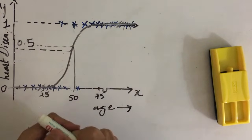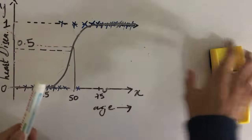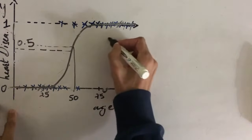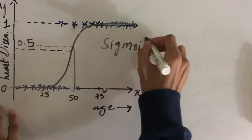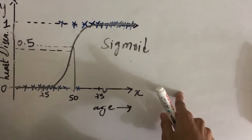But how do we draw this curve? So this curve is actually called as a sigmoid curve, and sigmoid curve looks something like this.